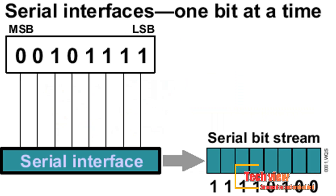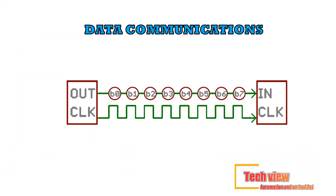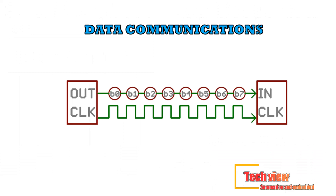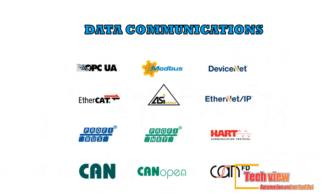Serial communication is when data is transmitted one bit at a time. A data word has to be separated into its constituent bits for transmission and then reassembled into the word when received. Serial communication is used for transmitting data over long distances and might be used for the connection between a computer and a PLC. It is necessary to exercise control of the flow of data between two devices, defining what constitutes the message and how the communication is to be initiated and terminated — this is termed the protocol. One device needs to indicate to the other to start or stop sending data.